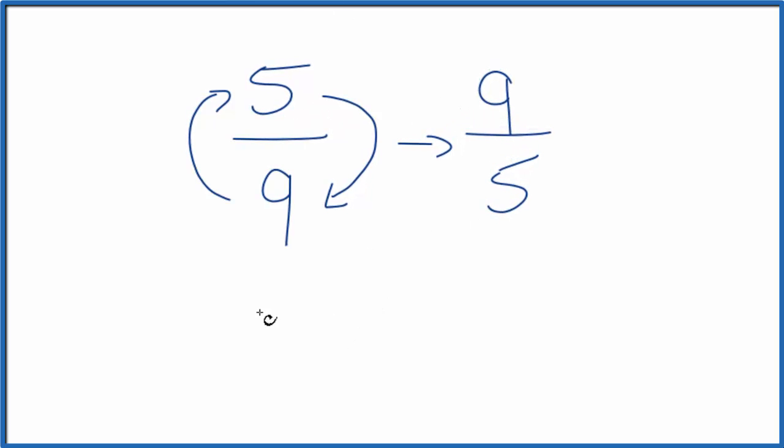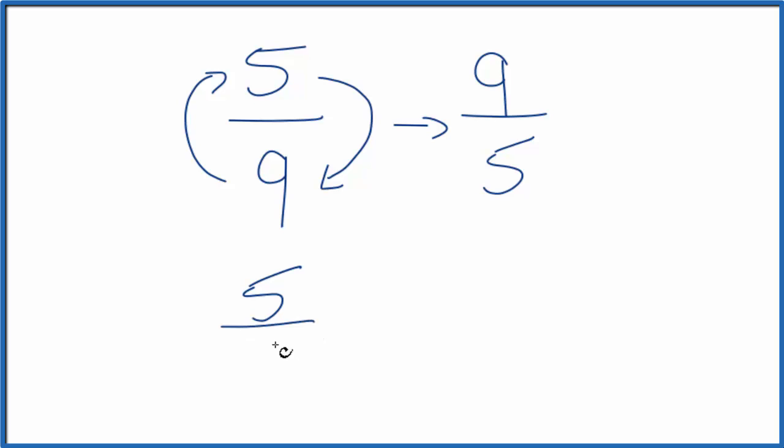And we can check our work. We can take that original fraction, the five ninths, and multiply it by the reciprocal, nine fifths. And we should end up with one.